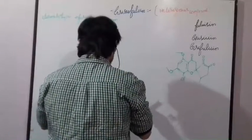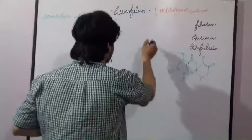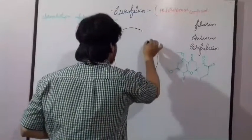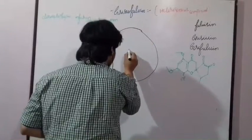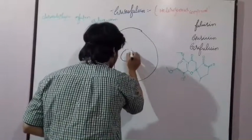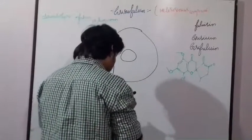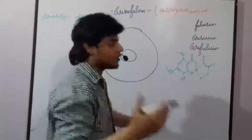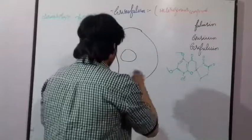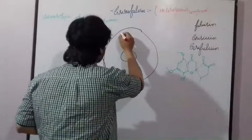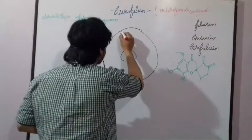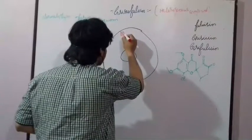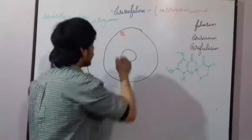So let's suppose this is a cell of the fungi. Inside the fungal cell we have a nucleus portion, as all of you know. And inside the nucleus we have the DNA and all the genetic material present in that area.